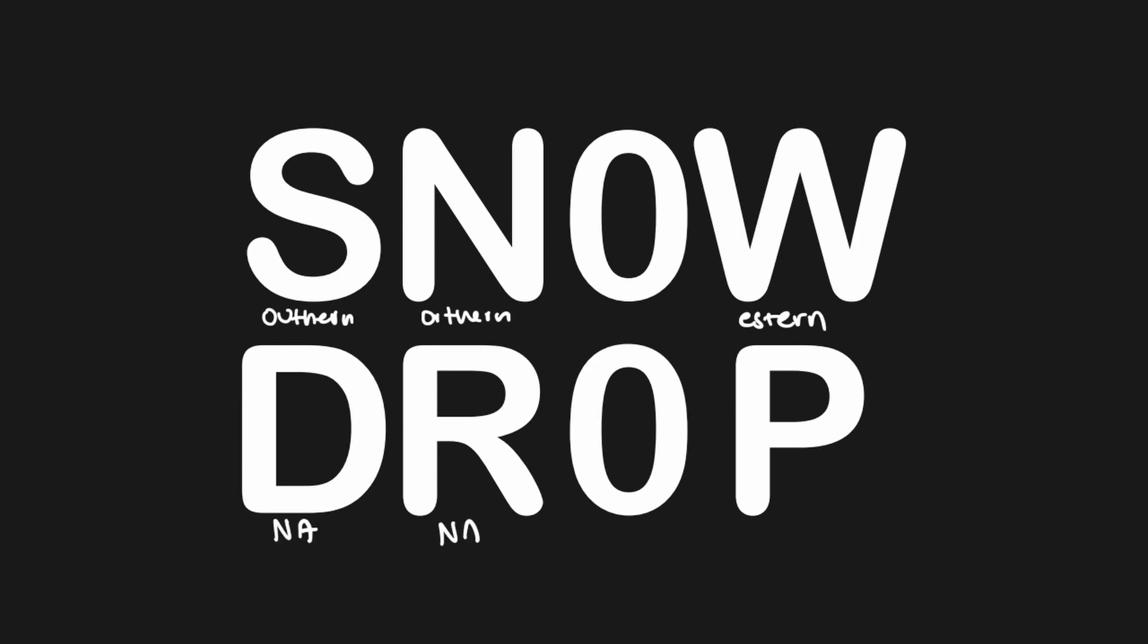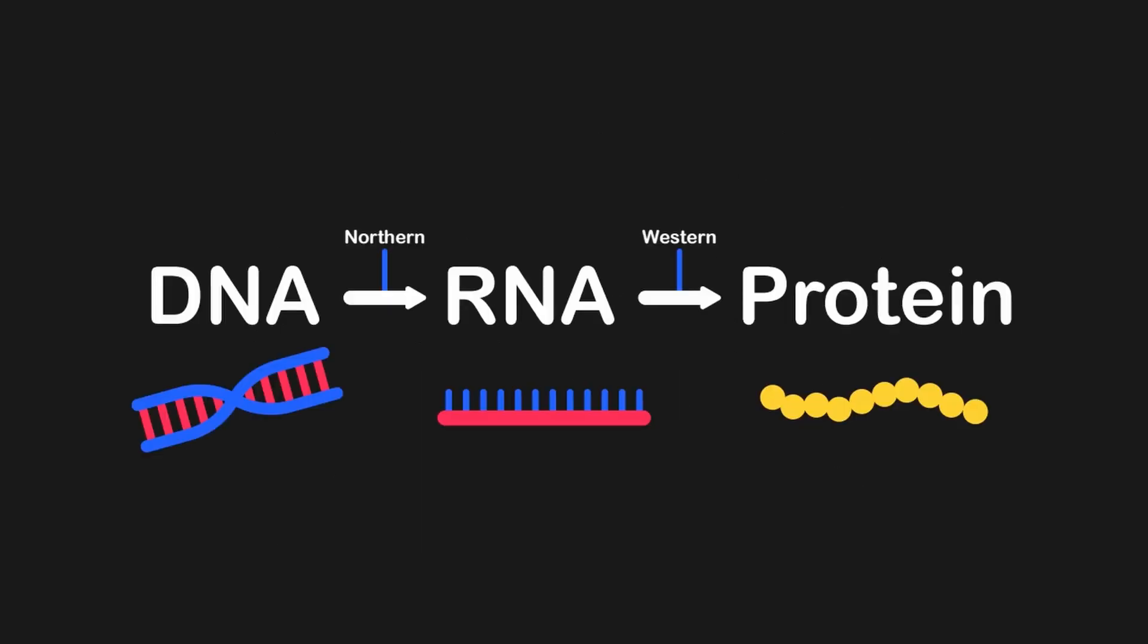We can remember which is which by using the mnemonic SNOWDROP, keeping in mind that the O doesn't stand for anything. In addition to measuring RNA, northern blots can tell us about transcription, while western blots can tell us about the level of translation in a cell by measuring the protein levels present.